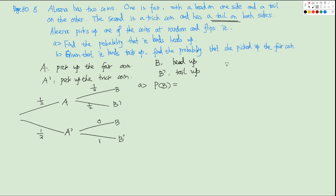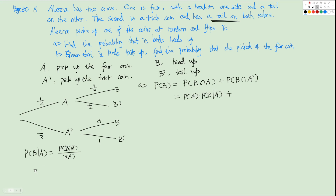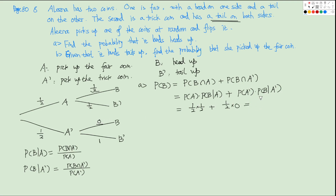For question A, find P(B). P(B) = P(A)×P(B|A) + P(A')×P(B|A') = 1/2 × 1/2 + 1/2 × 0 = 1/4.